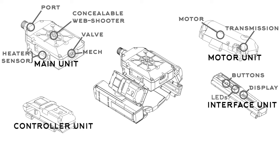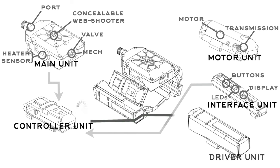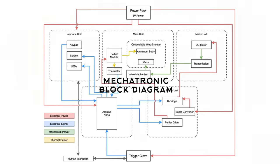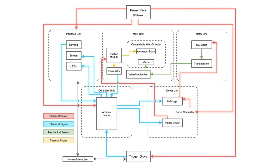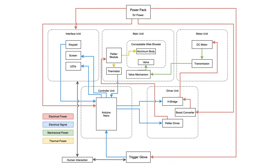Then you'd have the controller unit, which would interpret signals from the trigger, from the interface unit, from the temperature sensor, and convert them into signals sent to the driver unit, which takes the signals from the controller and converts them into the power that is sent to the heater and the actuator, which in turn act on the aluminum web shooter in the main unit. From these descriptions, we can construct what is called a mechatronic block diagram, which is very helpful for showing all the different ways mechanical and electrical power are transmitted in this mechatronic system.